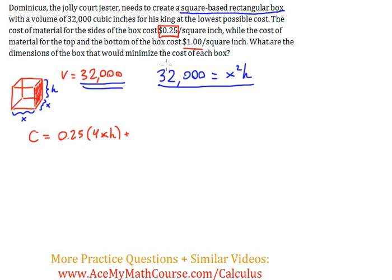Then we have the top and bottom of the box, which cost $1.00 per square inch. The bottom measures x², and we have both top and bottom, so that's 2x².